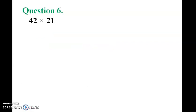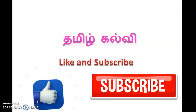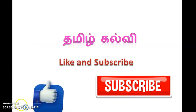Question 6: 42 into 21. So 42 equals 40 plus 2. 40 into 21, 2 into 21. The answer is 840 plus 42, which equals 882. Thank you students, see you in the next lesson.